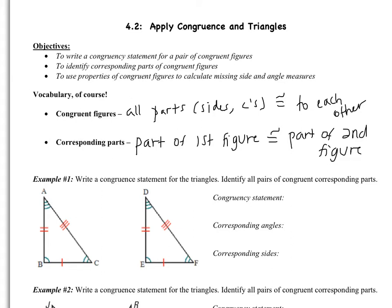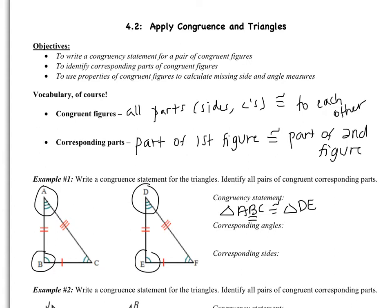Example one says write a congruent statement for the triangles, and then identify all pairs of congruent corresponding parts. So our congruency statement is going to be triangle ABC is congruent to — the second triangle is very important. Angle A is congruent to angle D, so D needs to come first. After D I put B. B is congruent to E, so E comes next. And then C is congruent to F, so F comes next. So that's a congruency statement.